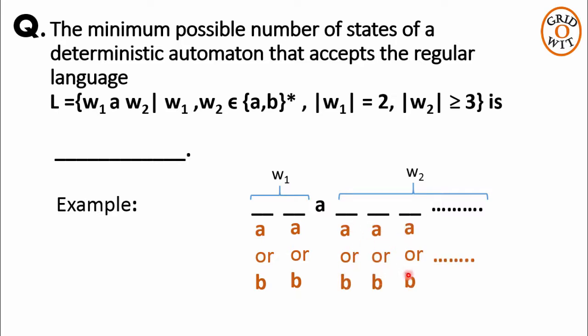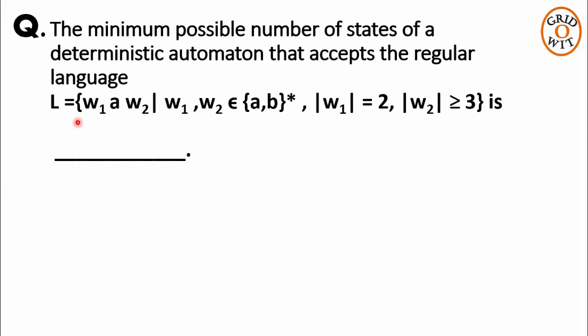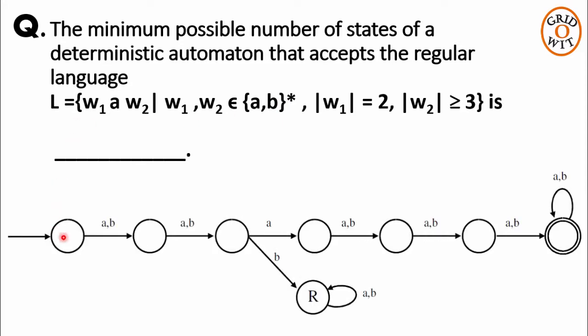Now let us design the DFA for it. From the starting state on first and second position we can have either a or b. Then we have single a.